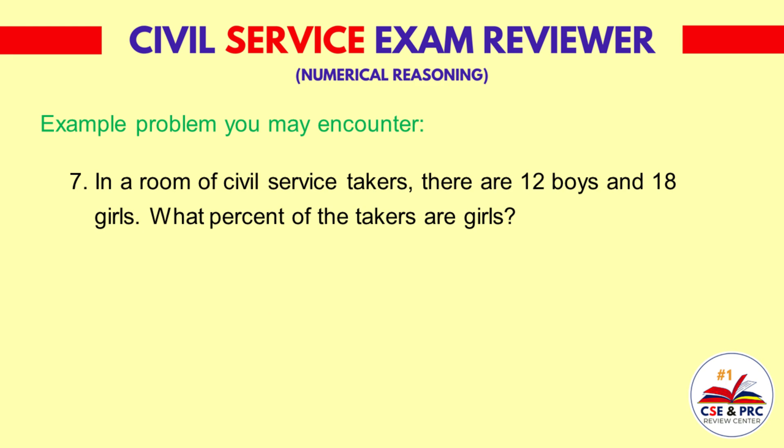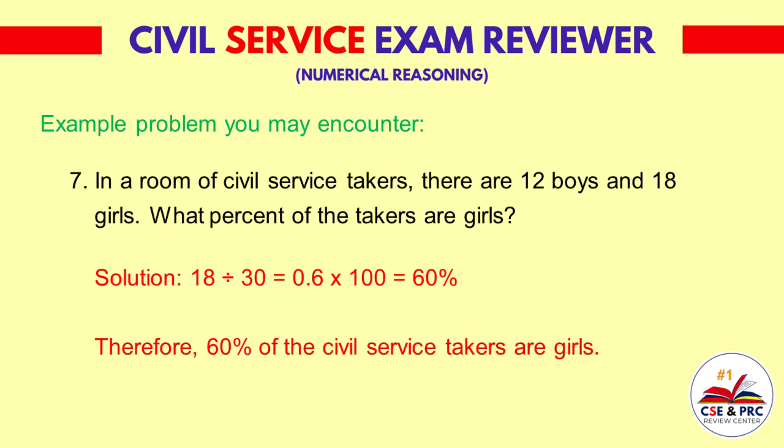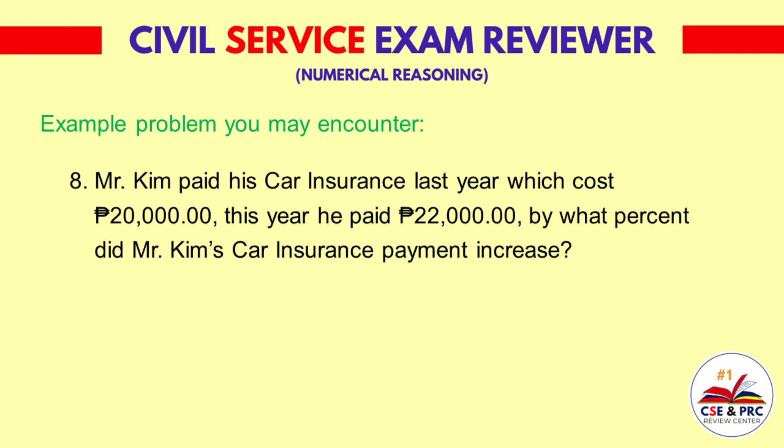Number 7: In a room of civil service takers, there are 12 boys and 18 girls. What percent of the takers are girls? Solution: 18 divided by 30 is equal to 0.6, times 100 equals 60 percent. Therefore, 60 percent of the civil service takers are girls.